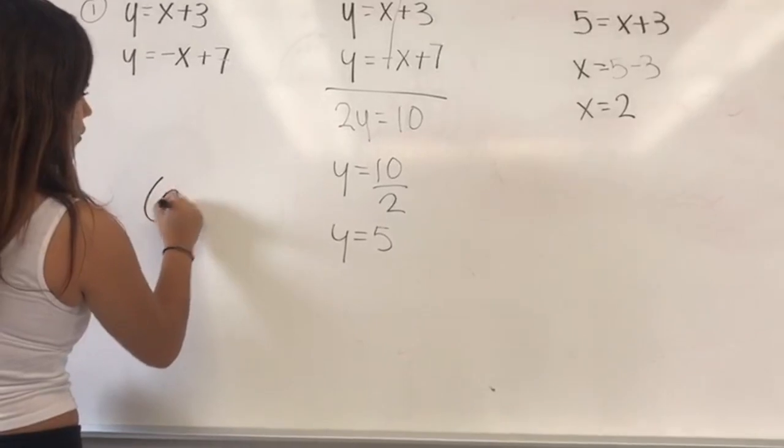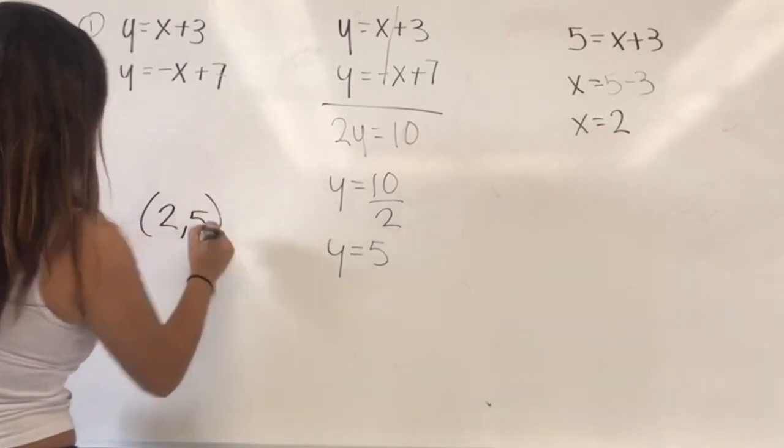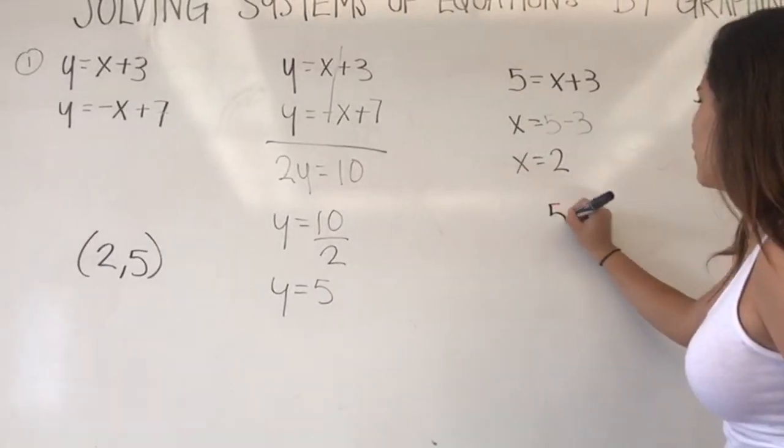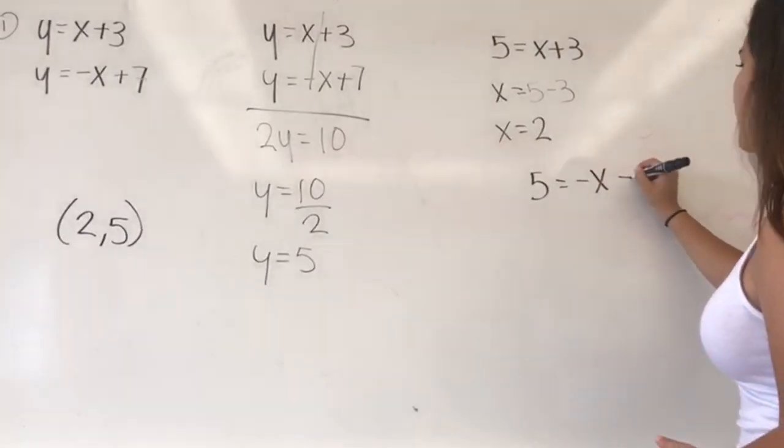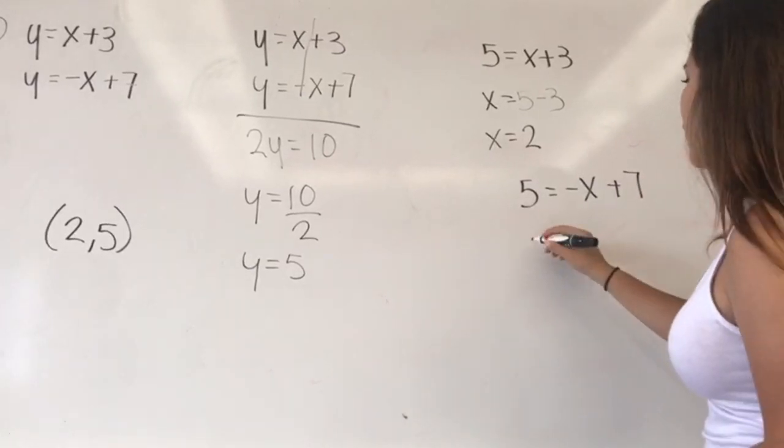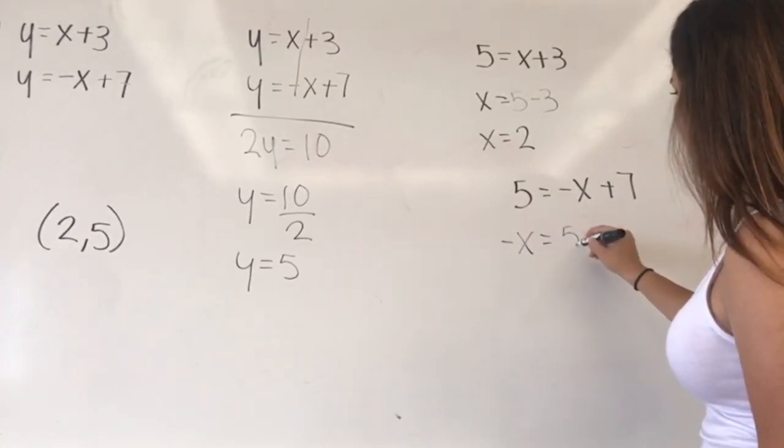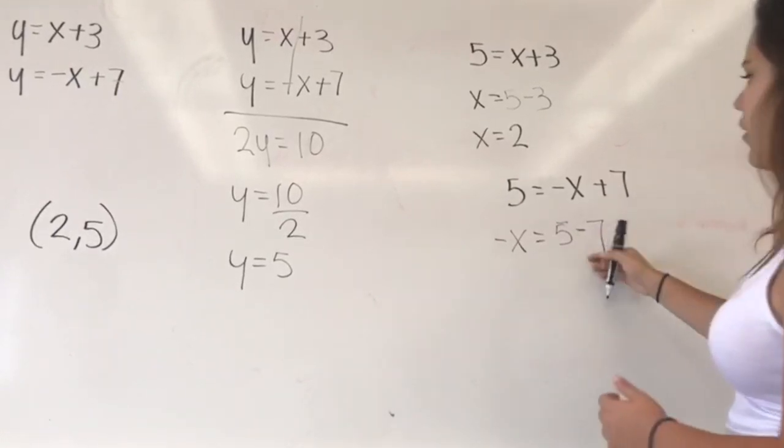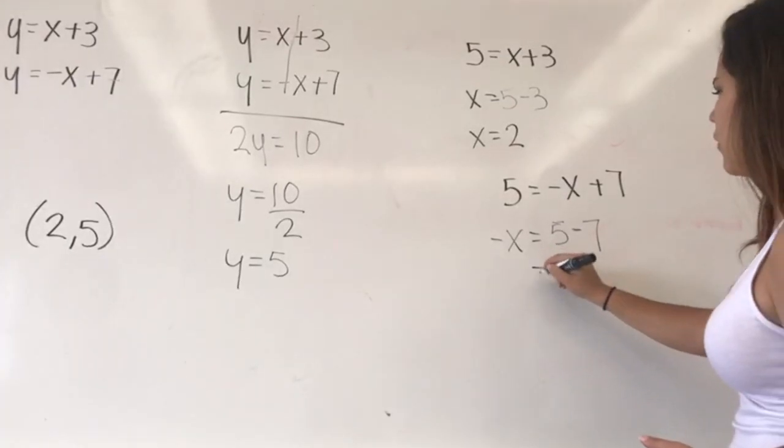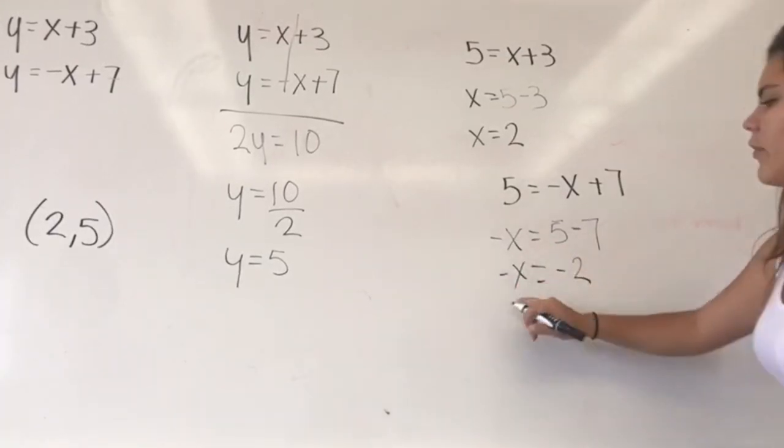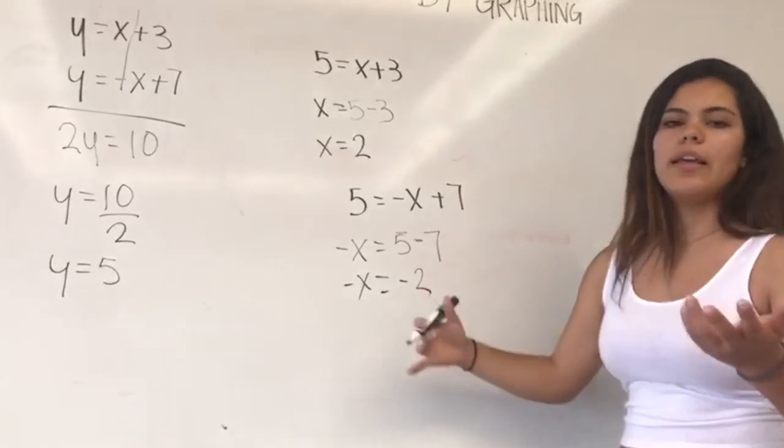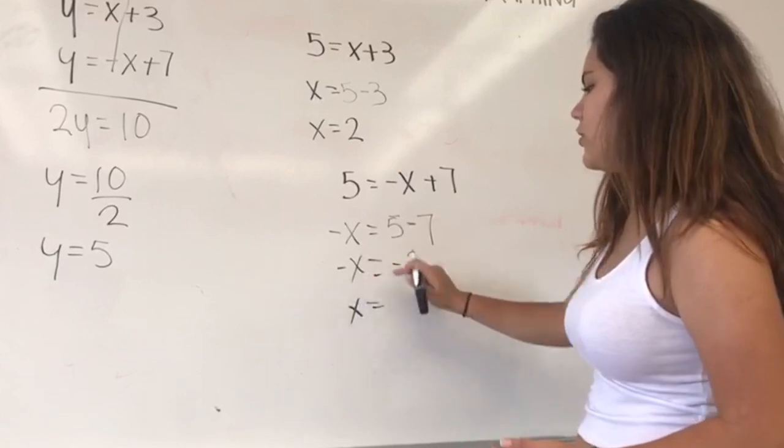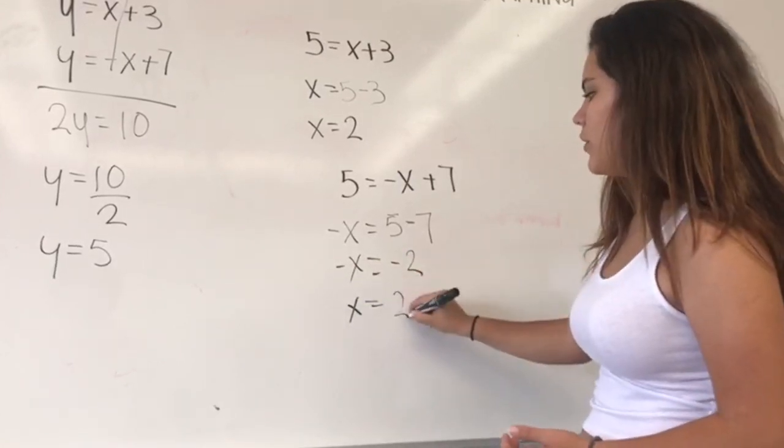You have like 2 and 5. And if you want to check it, you can do it with the other one. So you have y equals 5 equals negative x plus 7. So you have the negative x, 5, negative 7. And this gives you negative 2 and negative x. You can never leave the variable, like the x value, in negative. So you are going to switch places and you change the signs. So it's x equals 2.